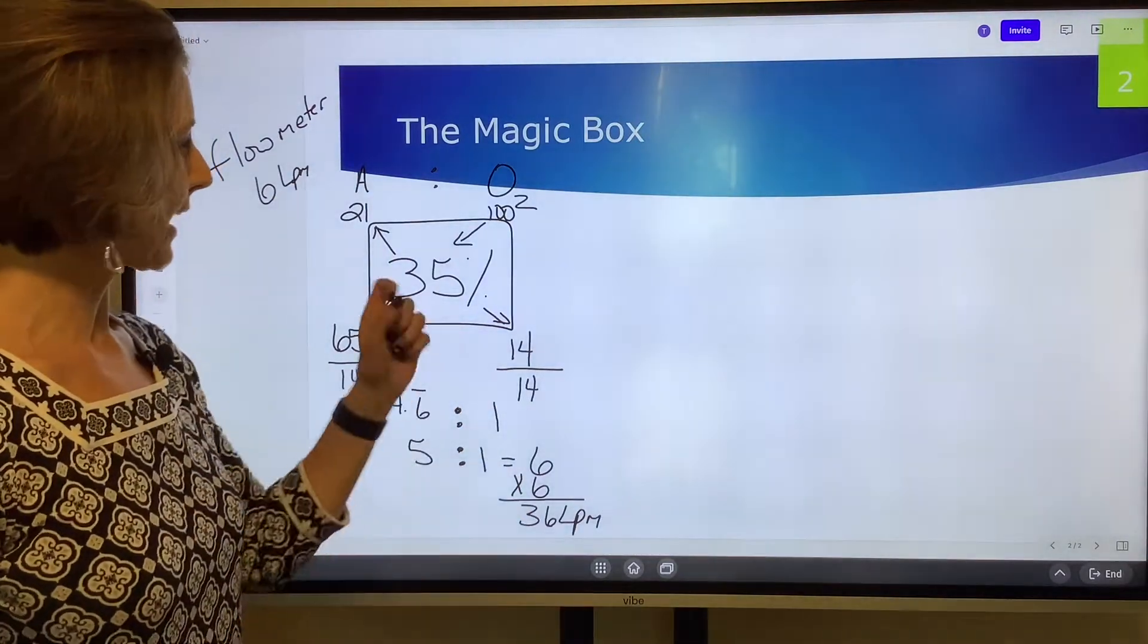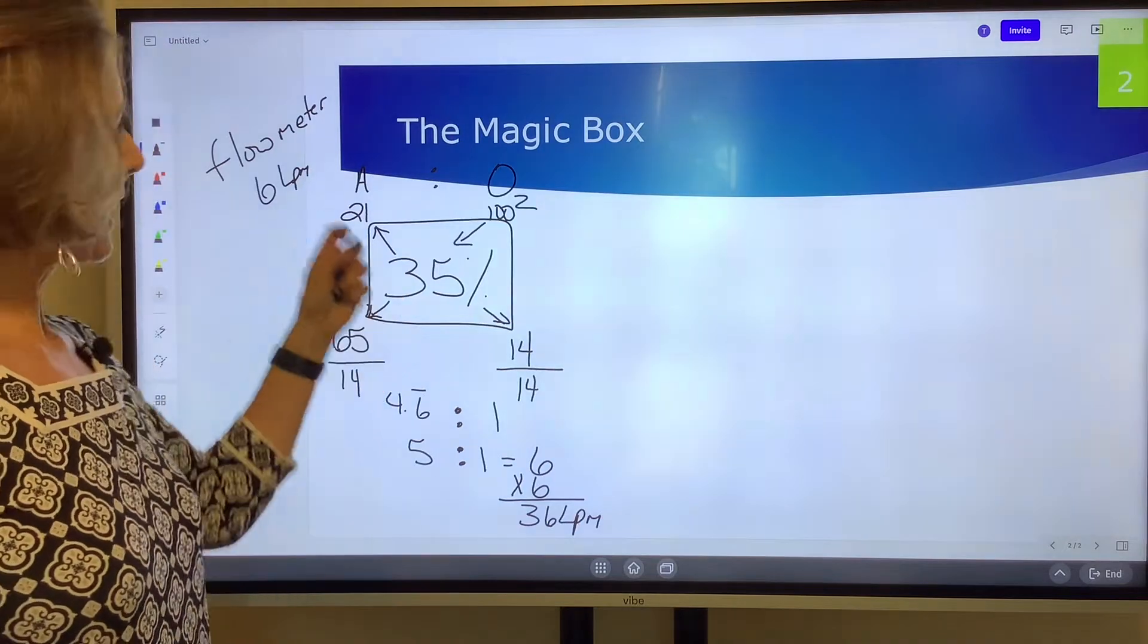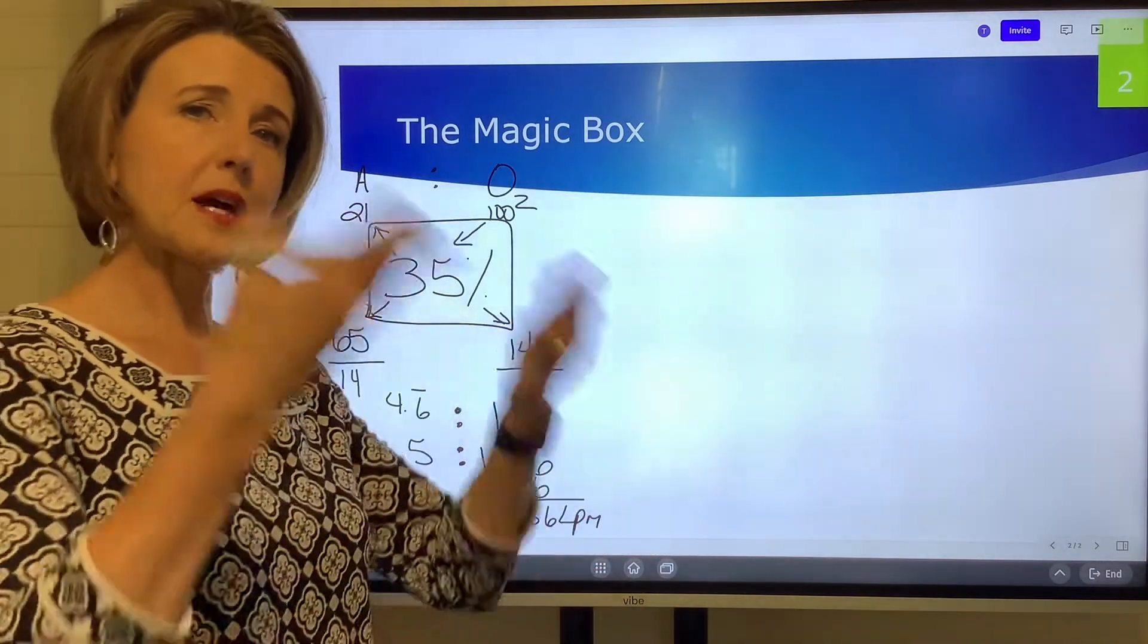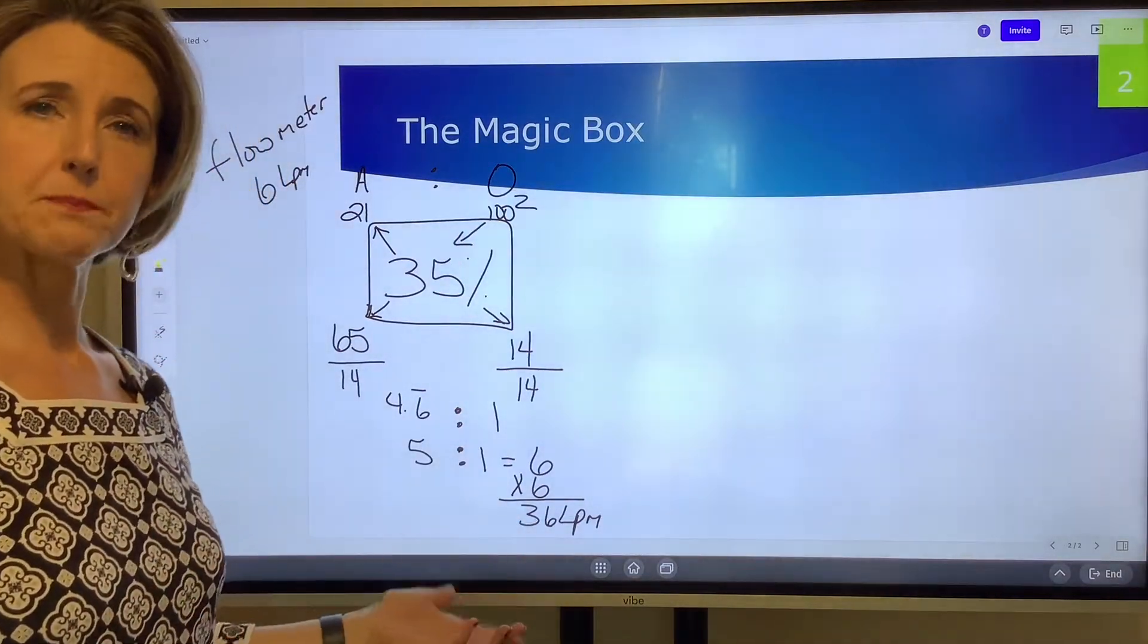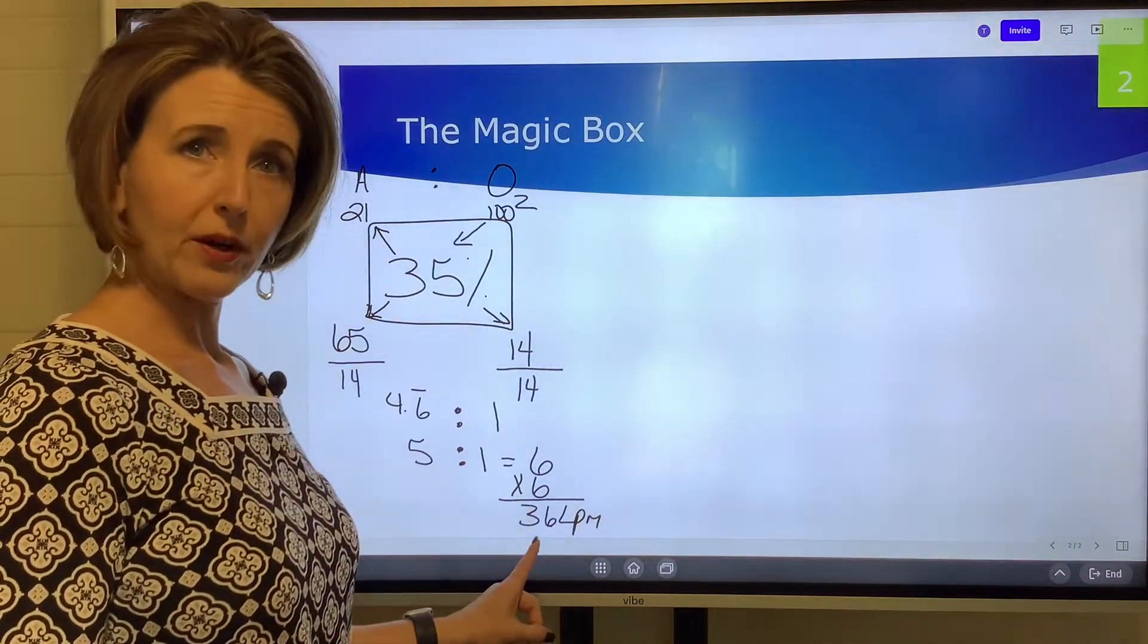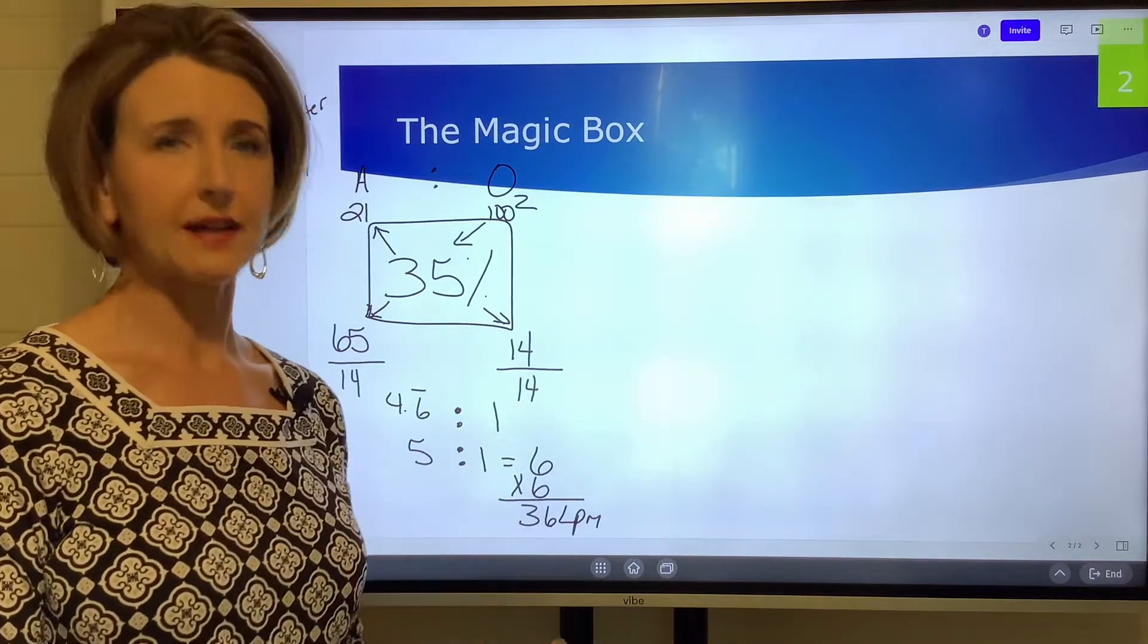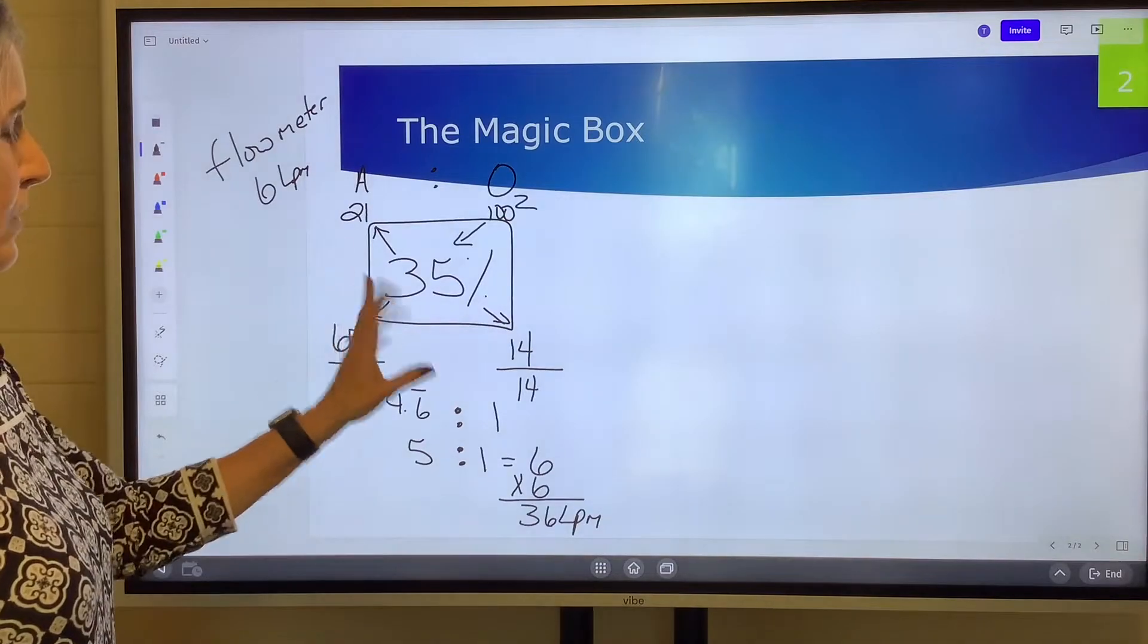What this means is when I have a Venturi mask set at 35 percent and I've got the flow meter set at 6, that 35 percent is coming up out of that mask to the patient at a speed of 36 liters per minute. The whole point is to make sure the total flow of the device exceeds the patient's inspiratory flow, that way they get a precise FiO2.